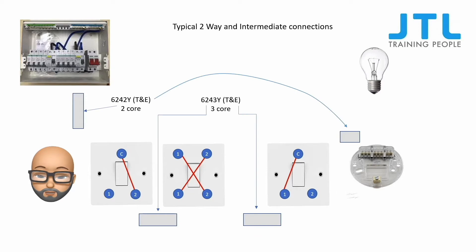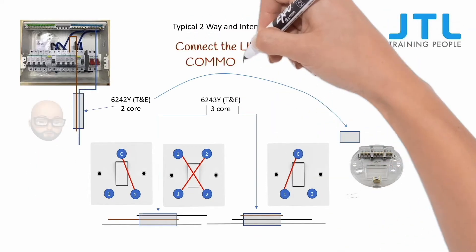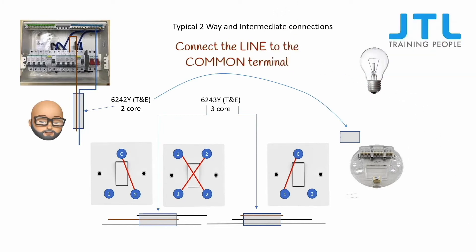For this circuit, we're going to be using twin nerve cable. First, we connect the line cable to the common terminal of the first switch.